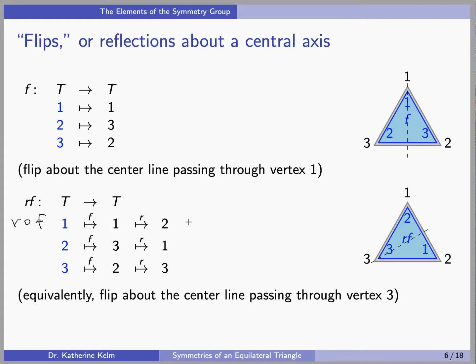So 1 gets sent to 1 by F, which then by R gets sent to 2. 2 ends up at 1, 3 ends up at 3. And that corresponds to a reflection of the original triangle about this axis here, this center axis passing through the element 3.